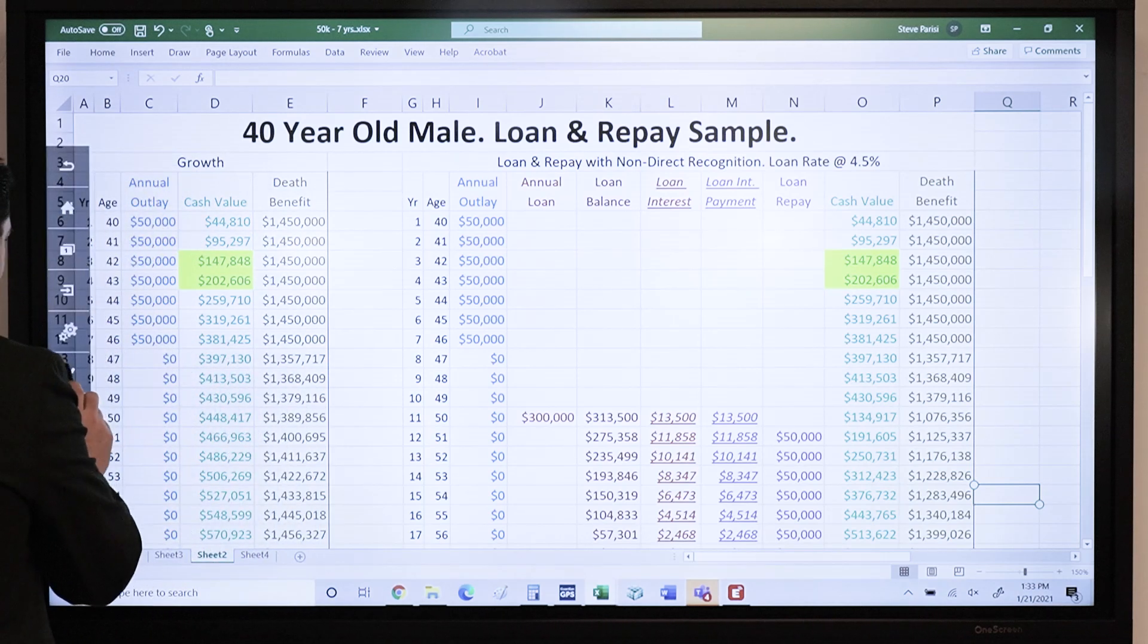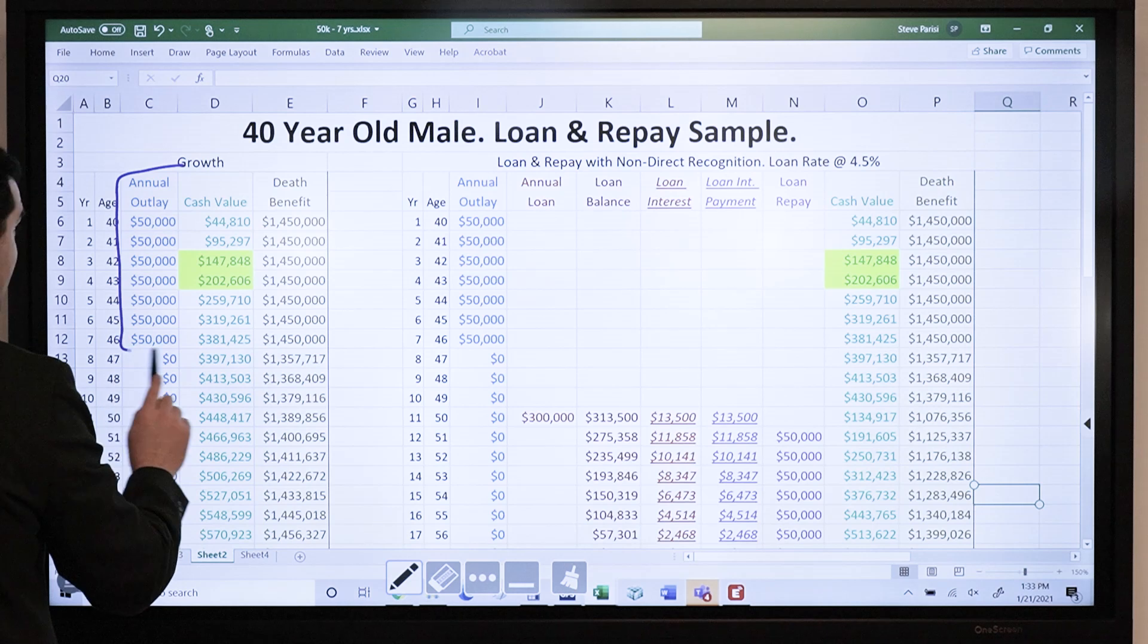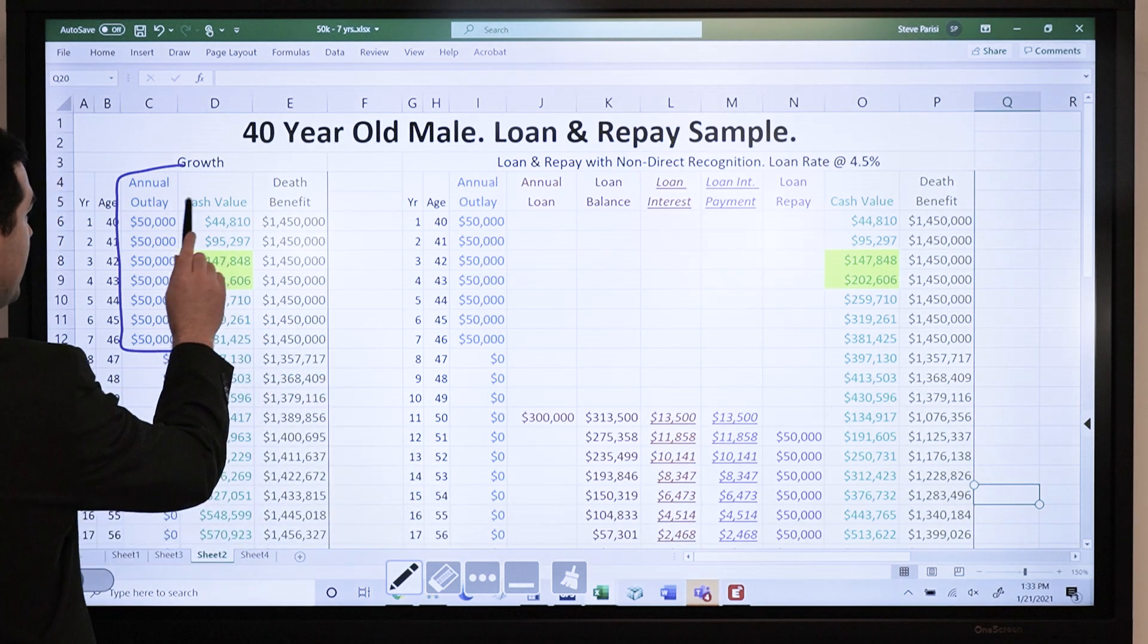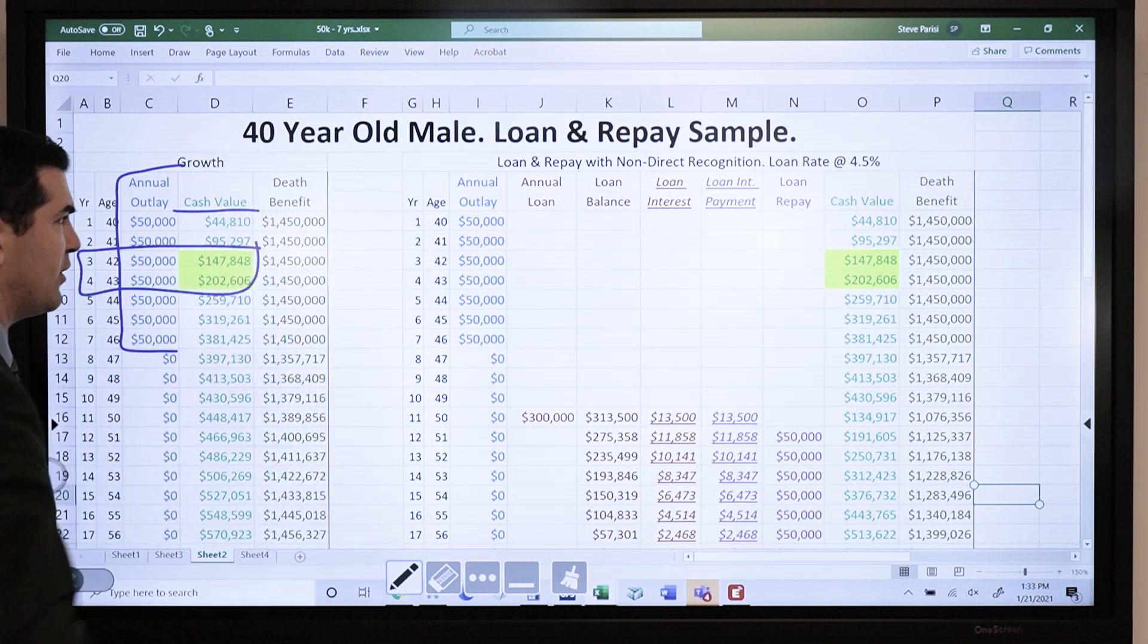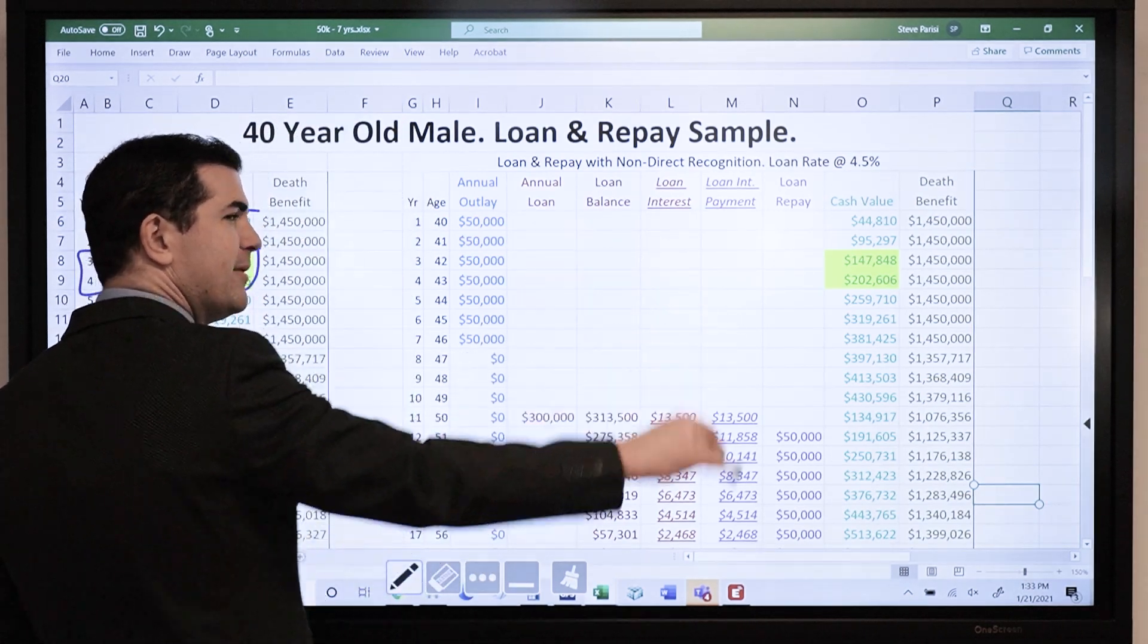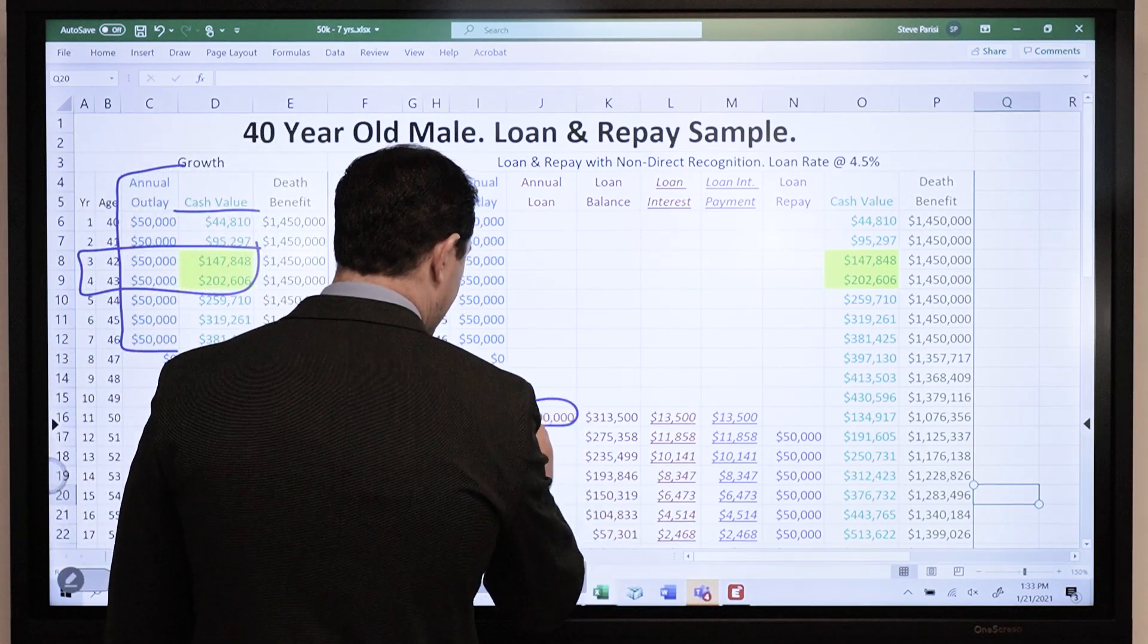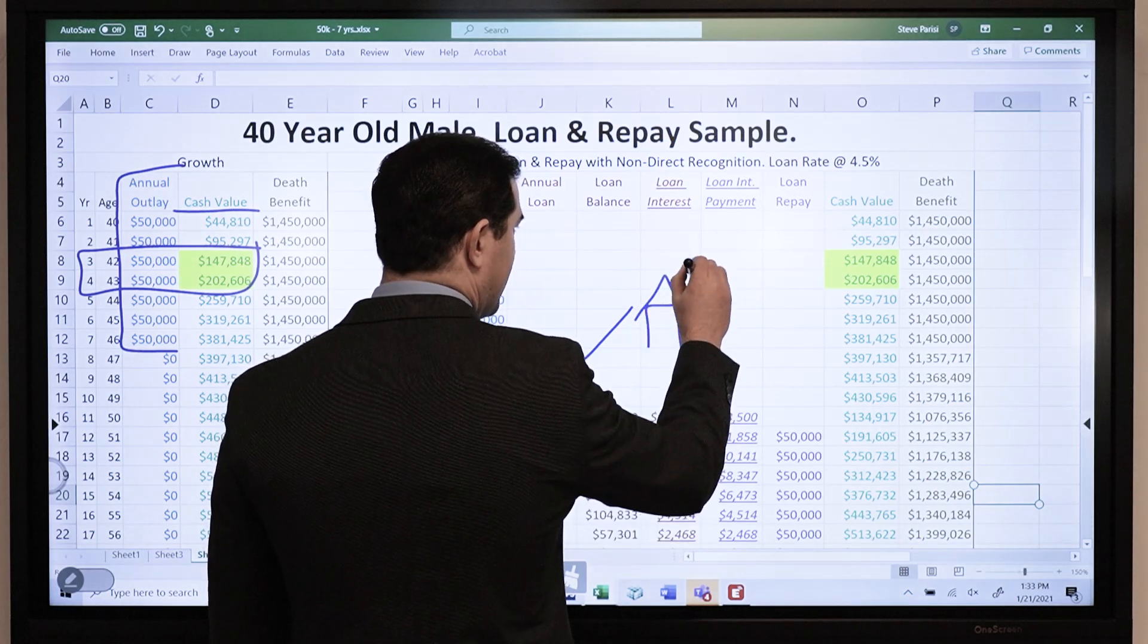40-year-old male, same funding, 50 for 7 years. This is the same policy. This one's based off of the dividend. Here's what I want to look at: crossing over, breaking even between 3 and 4. Loans. Takes out a policy loan. He can take it anytime. A lot of times we'll illustrate taking it earlier. Takes out a $300,000 loan.